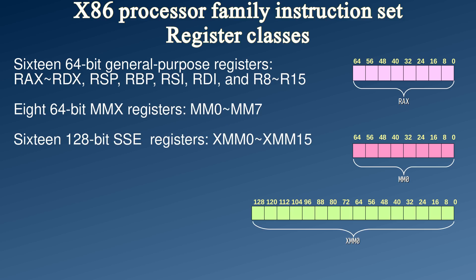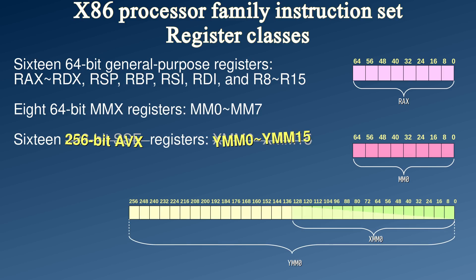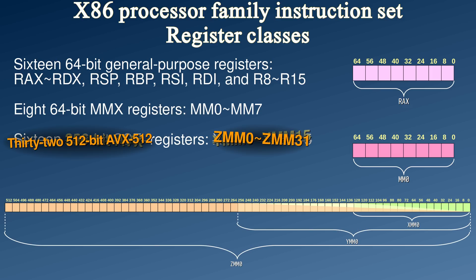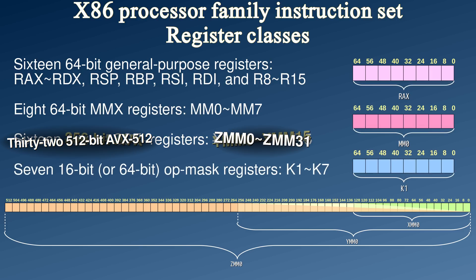There are also 16 128-bit vector registers, called XMM0 through XMM15. But since AVX, they are actually now 256-bit registers, called YMM0 through YMM15. Which is to say, if your CPU has AVX-512, they are now actually 512-bit registers, and there are 32 of them. If you have AVX-512, your CPU also has 7 op-mask registers, called K1 through K7. These registers are either 16-bit wide or 64-bit wide, depending which CPU you have.